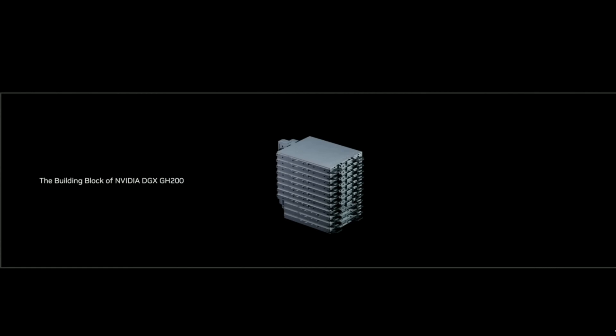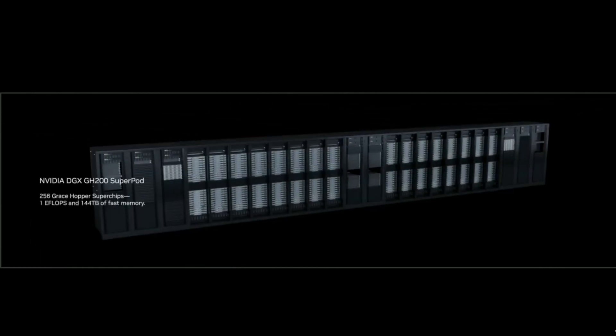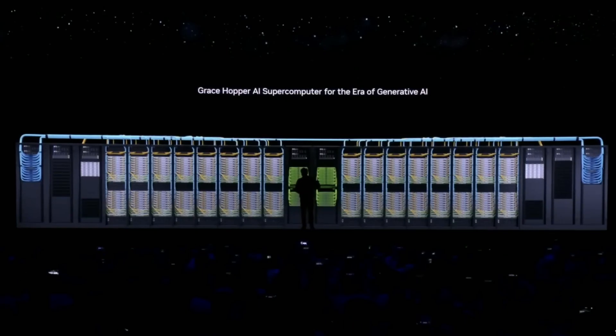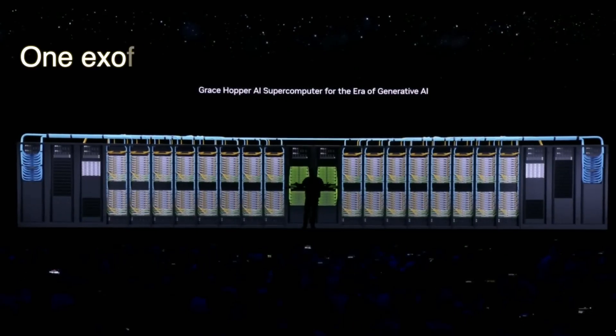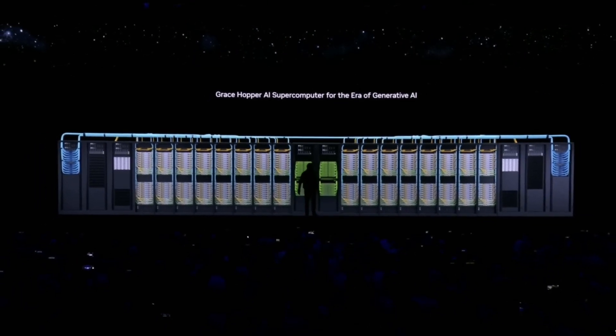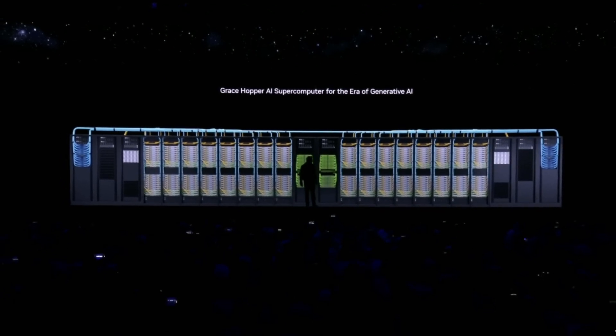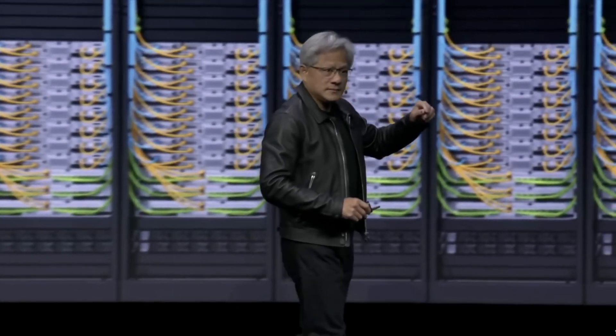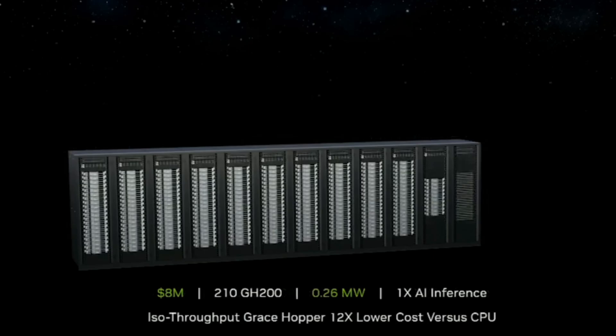You could take just about any large language model and put it into this chip, and it will inference like crazy. The inference cost of large language models will drop significantly. You can scale this up into a much larger GPU — this is the world's largest single GPU: one exaflop, four petaflops per GH200, with 256 units connected by NVLink into one giant system. Future frontier models such as OpenAI's GPT-5 and Google's Gemini will be built this way. It would cost $8 million and 260 kilowatts to run — 20 times less power and 12 times less cost than general purpose computing.